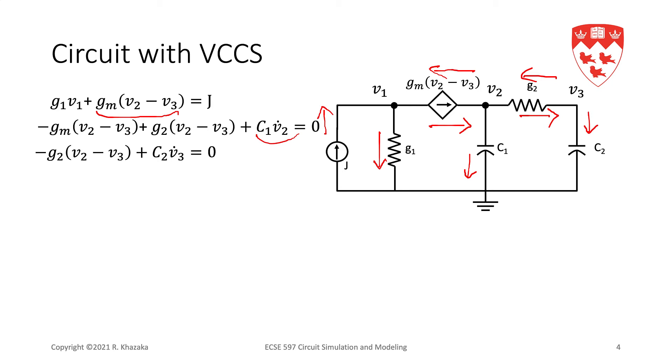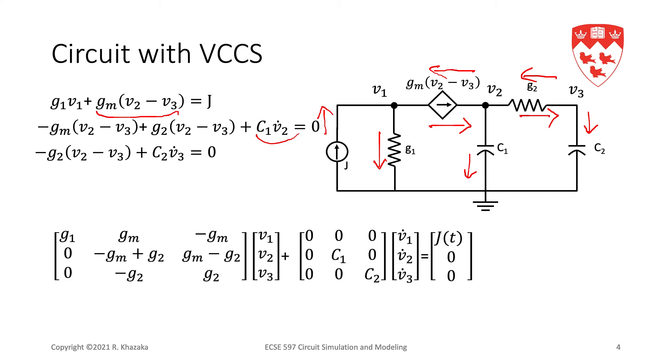And we will take these equations as usual. We collect the terms, and we can write them in matrix format. So, now we can see the impact of the controlled source. We have Gm minus Gm minus Gm, Gm.